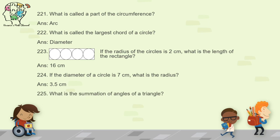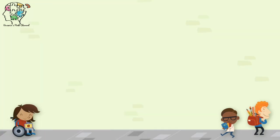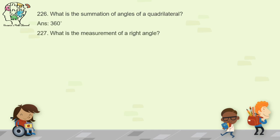Question 225: what is the sum of angles of a triangle? The sum of the three angles of a triangle is 180 degrees. Question 226: what is the sum of the four angles of a quadrilateral? The total sum is 360 degrees. Question 227: what is the measurement of a right angle? Obviously 90 degrees.